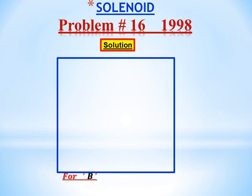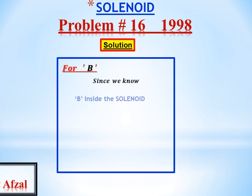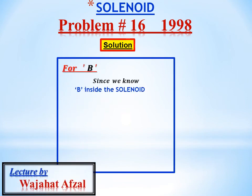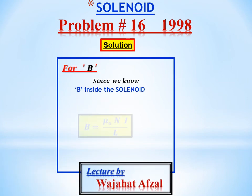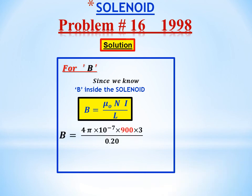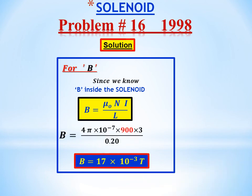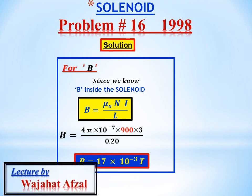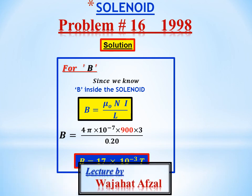In the solution, using the equation of magnetic field of a solenoid B = μ₀NI / L and placing the values, the required answer is 17 × 10⁻³ Tesla, or 0.017 Tesla.